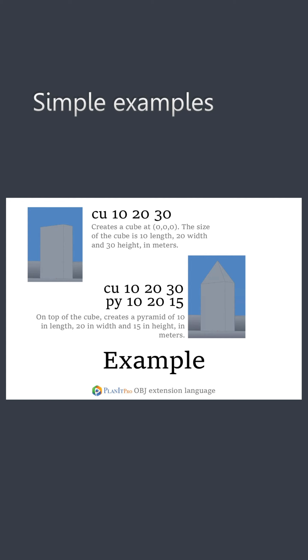The second example adds a pyramid on top of the cube. The pyramid's base is 10 by 20, which is the same as the cube. The height of the pyramid is 15. As I said earlier about the origin and the end, that's why the pyramid is automatically put or stacked on top of the cube.